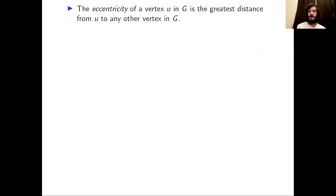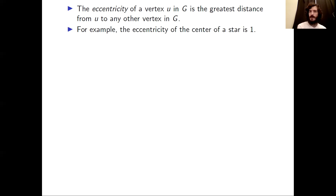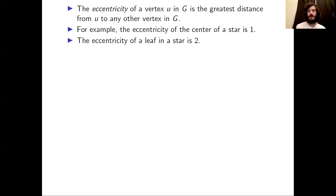Similar to distance, we can define eccentricity, a measure defined on a single vertex. The eccentricity of a vertex u in G is the greatest distance from u to any other vertex in G. For example, the center vertex of a star has eccentricity one (its greatest distance to any other vertex is one), while a leaf in a star has eccentricity two, since its greatest distance is to any other leaf.